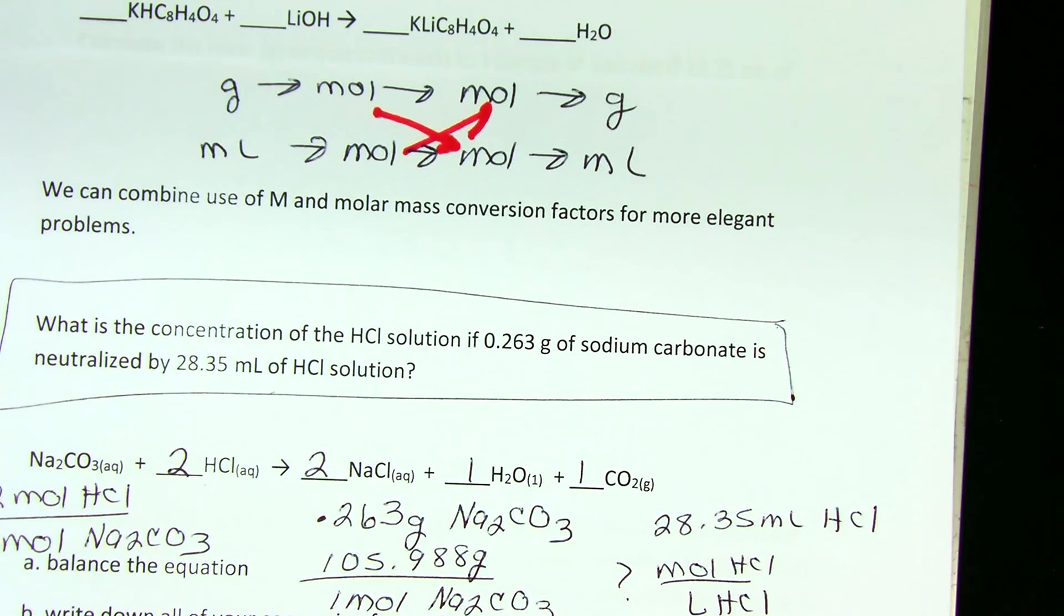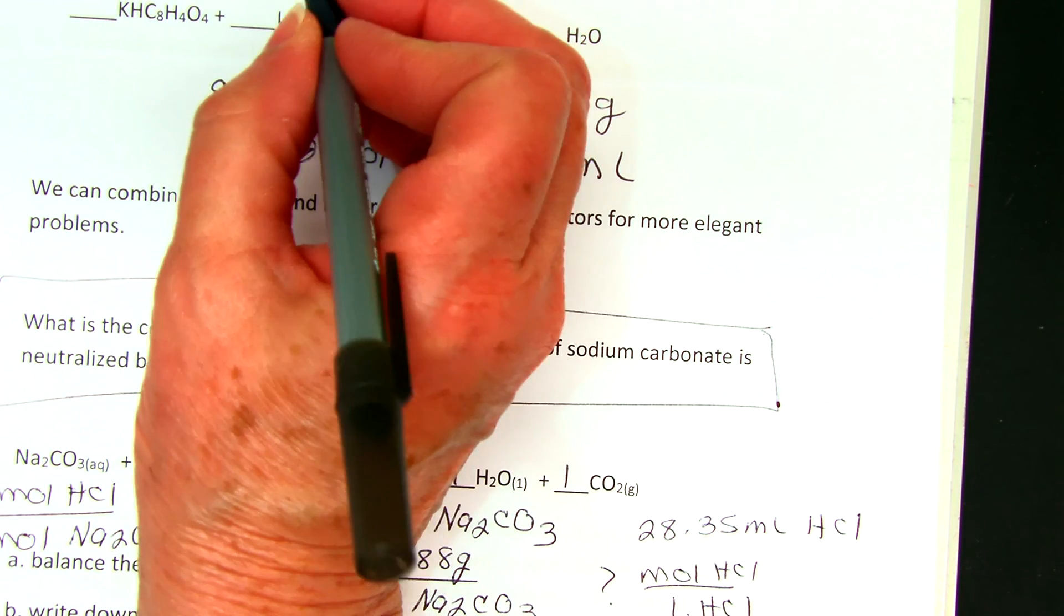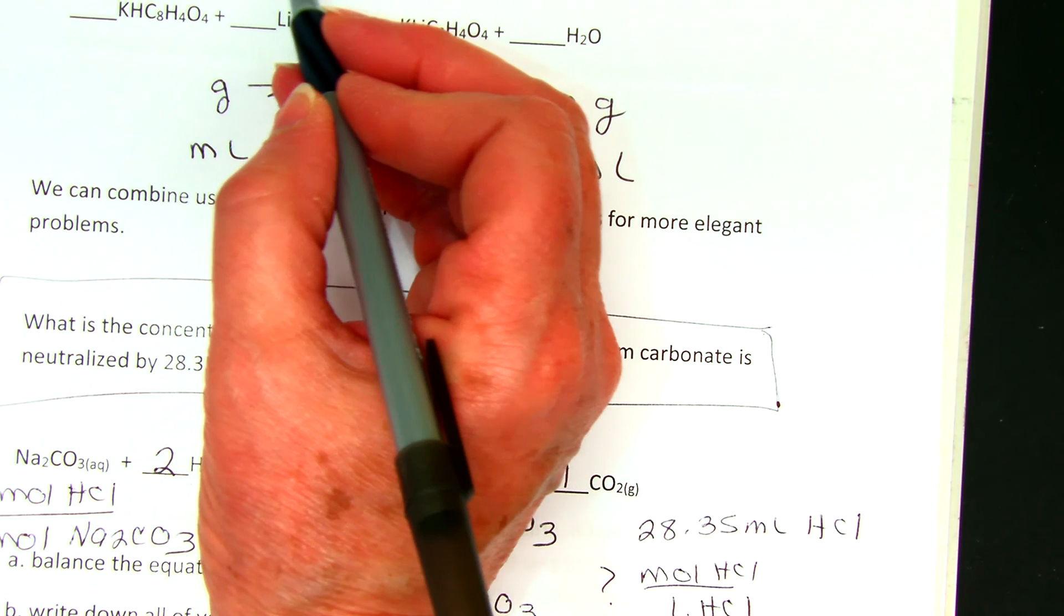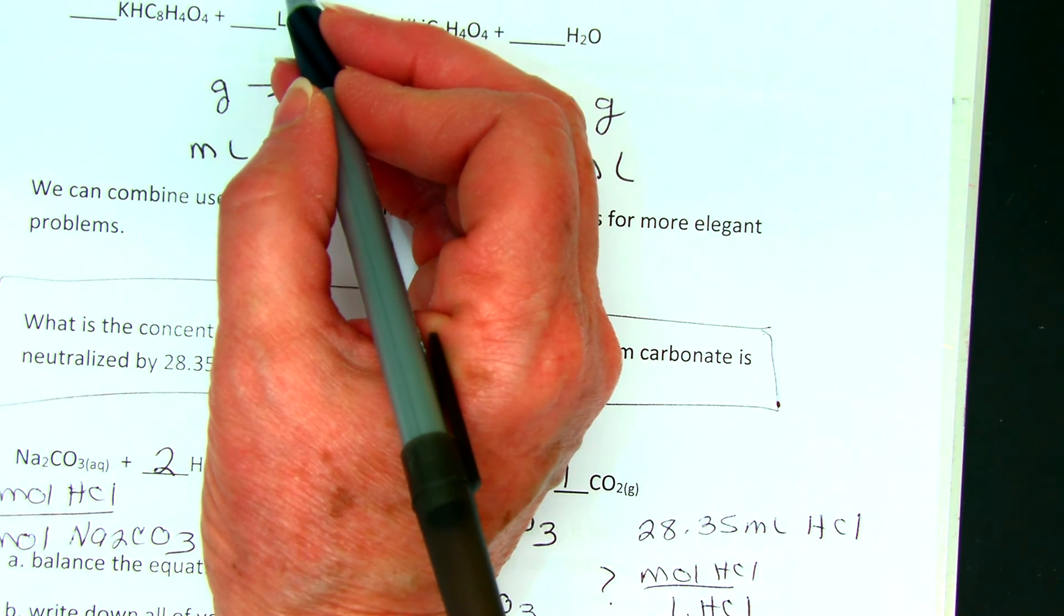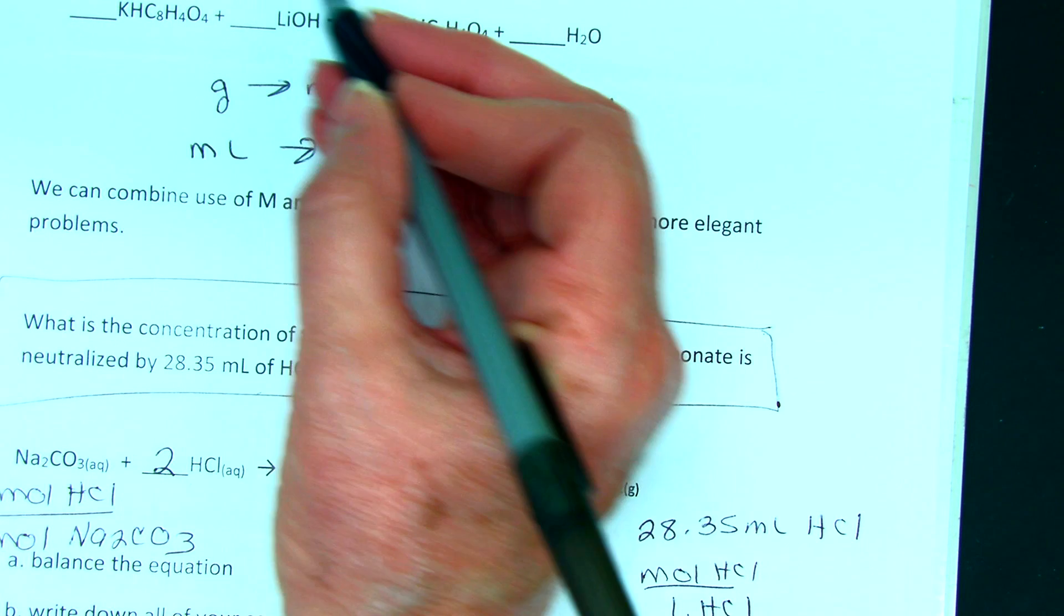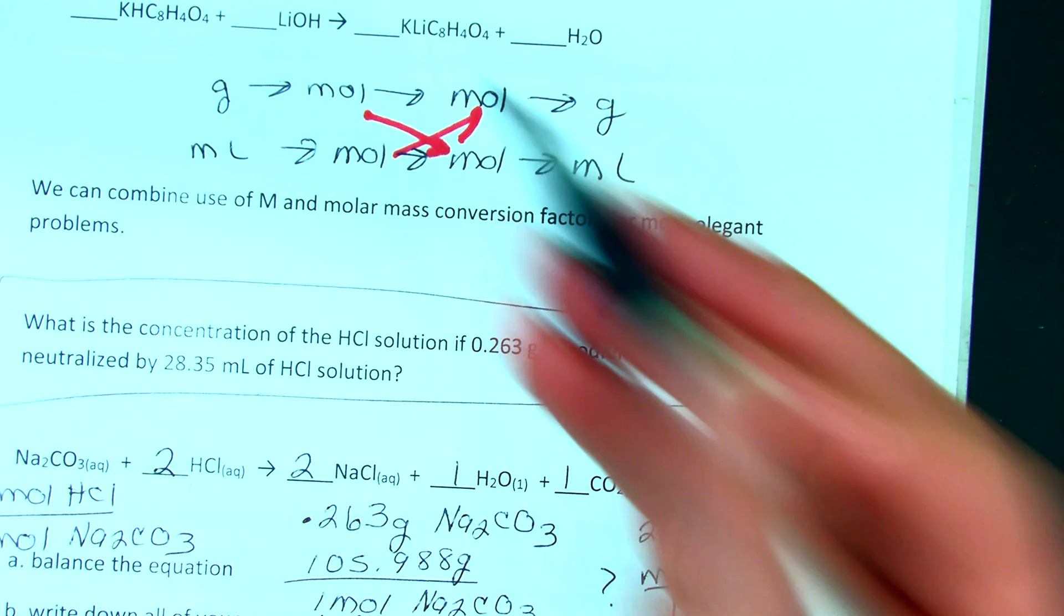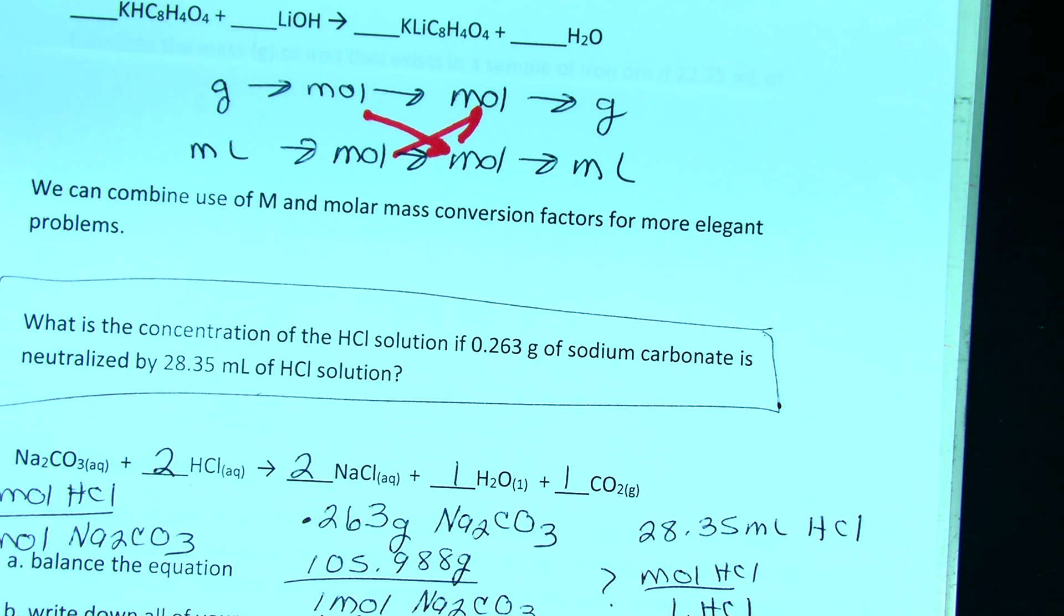You're going to look at finding the molarity of lithium hydroxide if it neutralized potassium hydrogen phthalate. Now we call potassium hydrogen phthalate KHP, but this is not a chemical formula, this is an abbreviation. There is no phosphorus in this—this is the formula for potassium hydrogen phthalate. Hydrogen phthalate comes from phthalic acid, and there's no phosphorus in it.